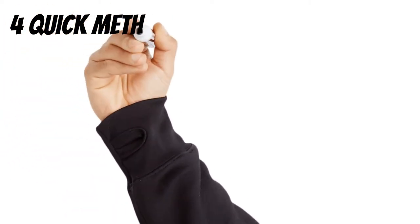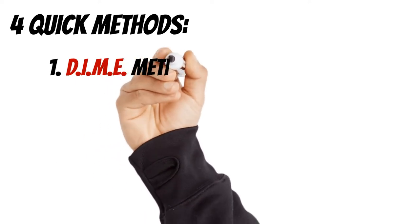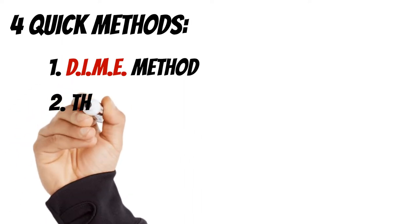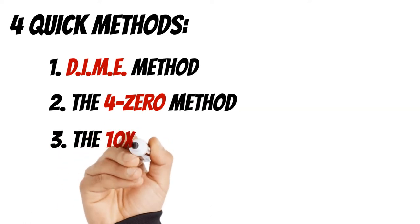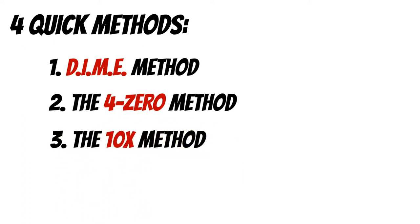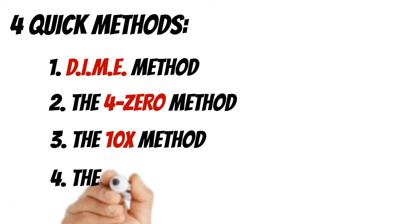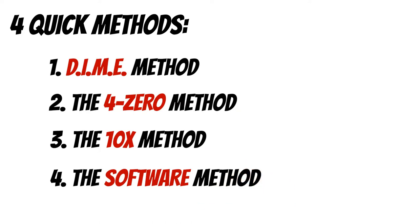Here are the four quick methods we want to cover today. Number one is the DIME method — I'll go through and explain what those four letters represent and how we calculate that. The second is the 4-0 method, which is very accurate and very easy and is actually my favorite method when sitting down with clients. Next is the 10 times method, which is the easiest and fastest and gives a pretty accurate number. And lastly is the software method, which is most accurate — there are a lot of tools online, but we have a custom spreadsheet where we plug in numbers and it produces the exact coverage amount needed.